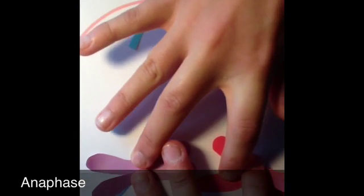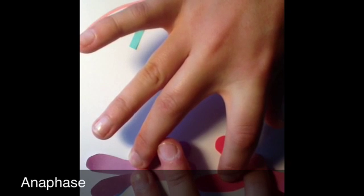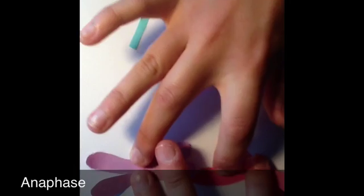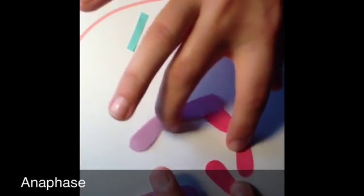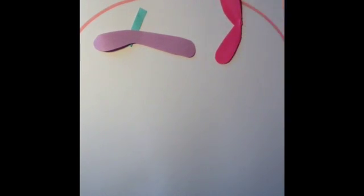So my fingers are going to be the spindle fibers in this scenario, and they're going to be pulling, eventually, the sister chromatids away from each other. So when we get to anaphase, the spindle fibers are attached, and they start to pull at the sister chromatids to get them to the other side of the cell. So if you look carefully, the identical sides are going to the opposite poles of the cell.